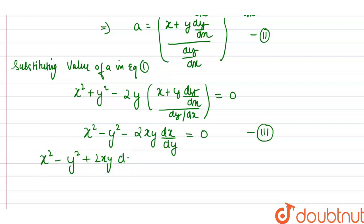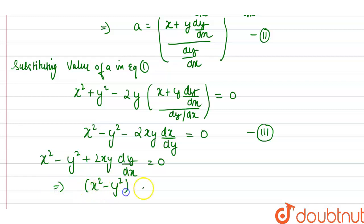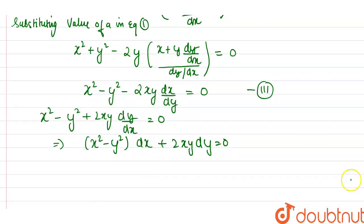We need to separate the terms of dx and dy. This implies (x² - y²)dx + 2xy·dy = 0.